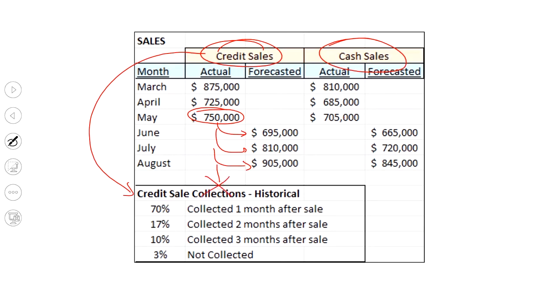And there's going to be 3% of it we're never going to get. So even though we have that sale, that's effectively a non-cash transaction. We're never getting paid.